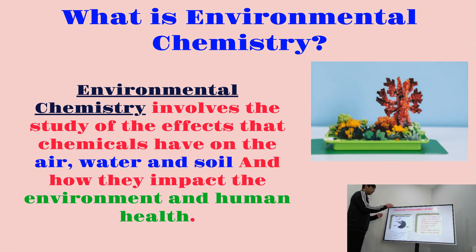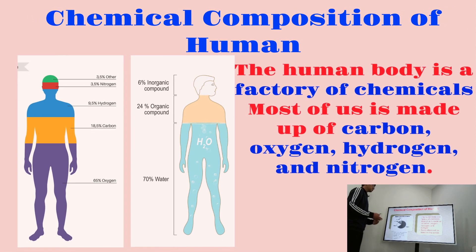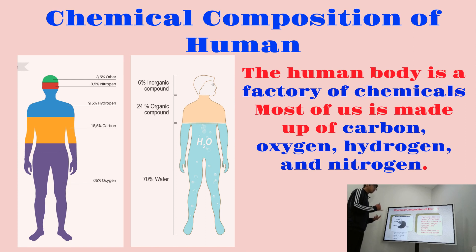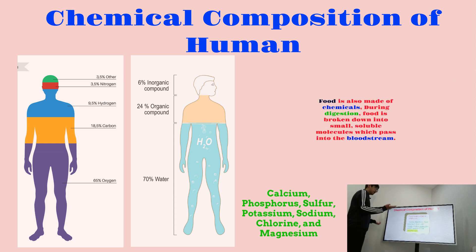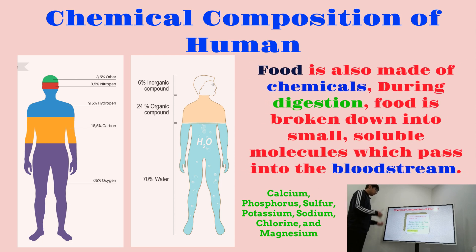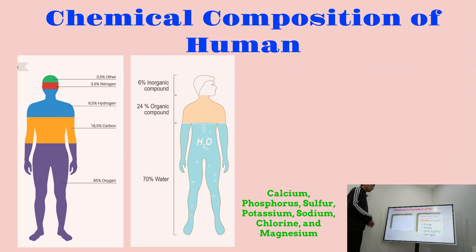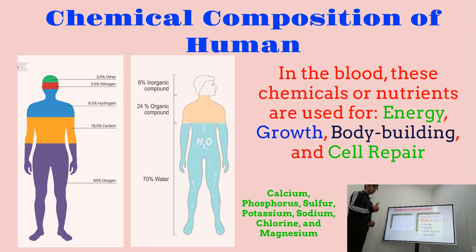Let's first look at the chemical composition of humans. The human body is made up of chemicals — most of us is made out of carbon, oxygen, hydrogen, and nitrogen, among others listed on screen. Food is also made out of chemicals, and during digestion, food is broken down into small soluble molecules which pass into the bloodstream, where nutrients are used for energy, growth, body building, and cell repair.